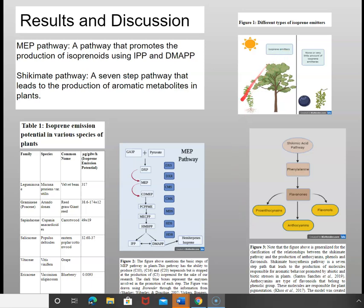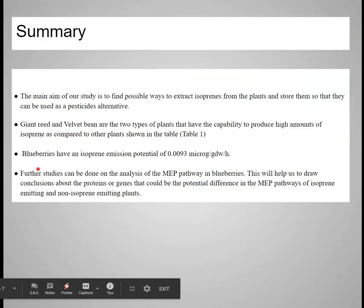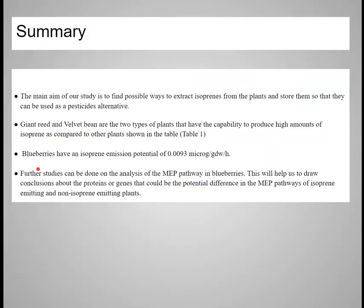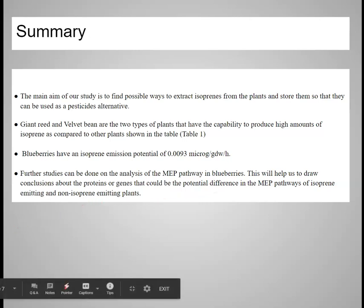These are the different types of isoprene emitters — giant reed, blueberry, and grape. In summary, the main aim of our study is to find possible ways to extract isoprene from plants and store it so it can be used as a pesticide alternative. Giant reed and velvet bean are the two types of plants with the capability to produce high amounts of isoprene compared to other plants. Blueberry has an isoprene emission potential of just 0.0093 micrograms per gram dry weight per hour. There should be a different protein or gene that can help us find the possible pathway difference in the MEP pathway of isoprene-emitting versus non-isoprene-emitting plants.